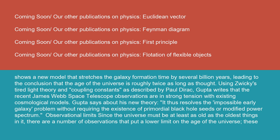Using Zwicky's tired light theory and coupling constants as described by Paul Dirac, Gupta writes that the recent James Webb Space Telescope observations are in strong tension with existing cosmological models. Gupta says about his new theory: It thus resolves the impossible early galaxy problem without requiring the existence of primordial black hole seeds or modified power spectrum.